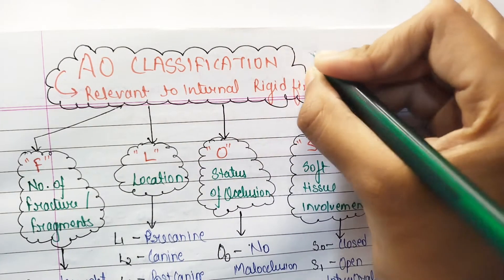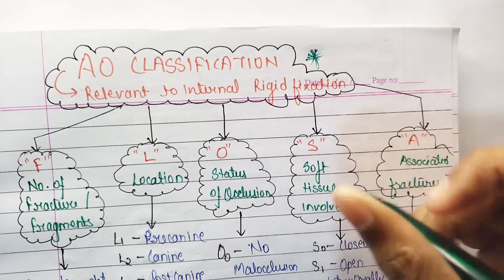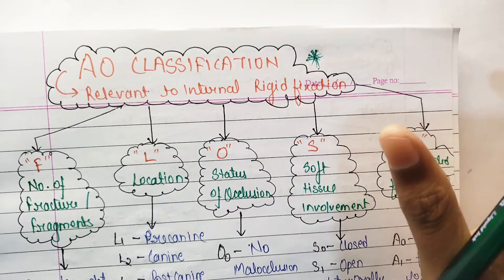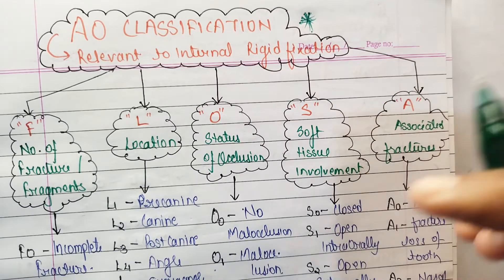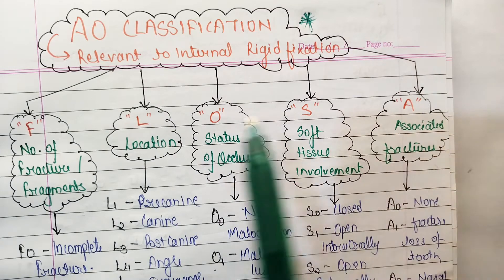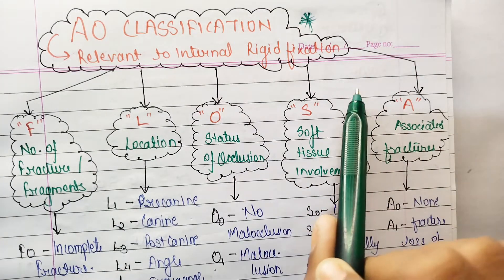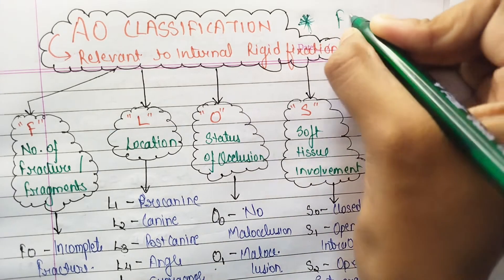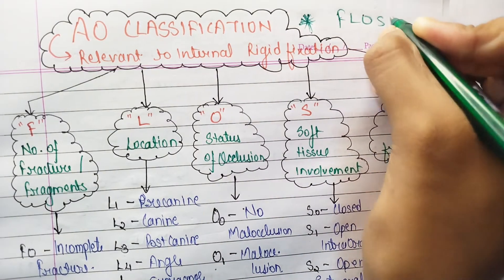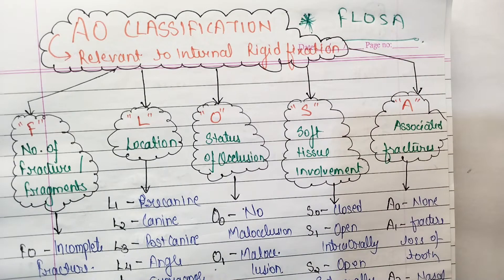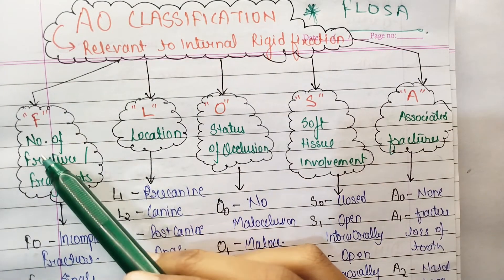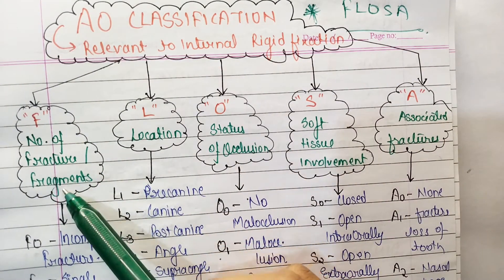We are going to judge the grade of severity using the AO classification, which is relevant to internal rigid fixation. To remember the components, use the mnemonic FLOSA: F for number of fractures or fragments, L for location, O for occlusion, S for soft tissue involvement, and A for associated fractures.